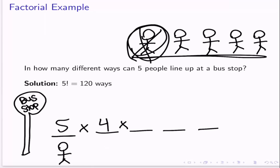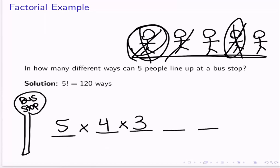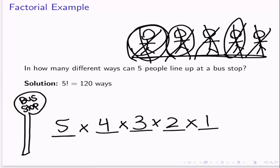Now one of those 4 people has lined up — it doesn't matter which one, just that one of them did. How many possibilities are there for the next spot? Well, there are 3 people left, so 3 possible people for that slot. Then someone lined up there, so we cross someone else off. Now there are only 2 people left — 2 possibilities for the 4th spot — and then only 1 possibility for the last spot. So the answer is 5 times 4 times 3 times 2 times 1, which equals 120. Note that this is also equal to 5 factorial.